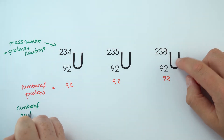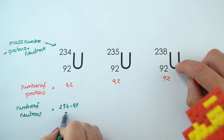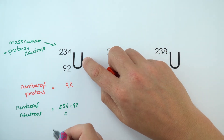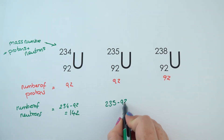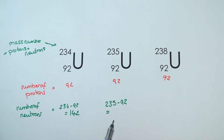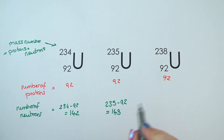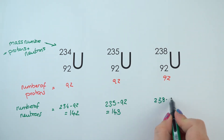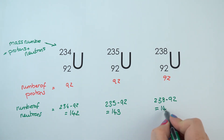Uranium-238 is what most of the naturally occurring uranium is, and this one can actually undergo alpha emission to become more stable. We've also got uranium-234, which is very short-lived and a radioactive isotope of uranium. To work out the number of neutrons, all you need to do is look at the difference between the number at the top and the number at the bottom — sometimes it's worth using a calculator to avoid mistakes. These three isotopes, although they all have the same number of protons and the same number of electrons if they were just atoms, are made different — made isotopes — by having a different number of neutrons.